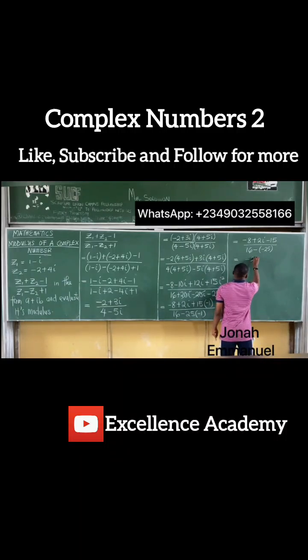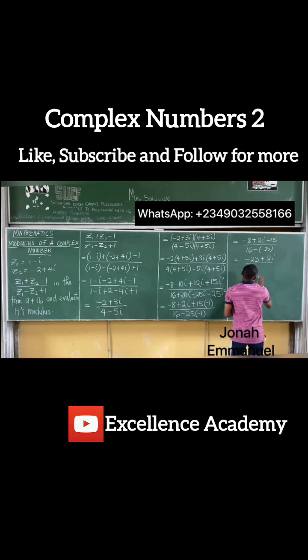That's about minus 23 plus 2i all over 16. Minus minus is plus. It becomes 16 plus 25. That's 41.